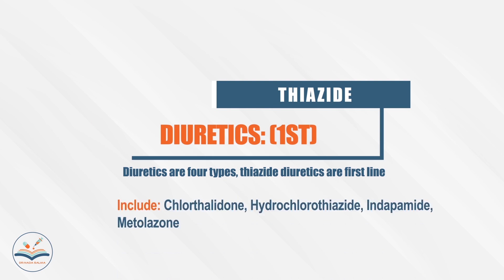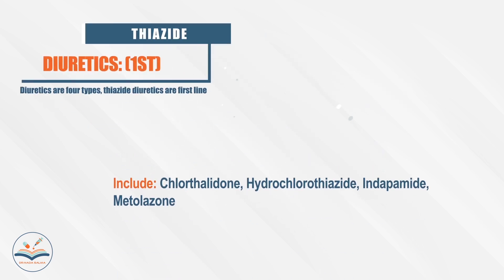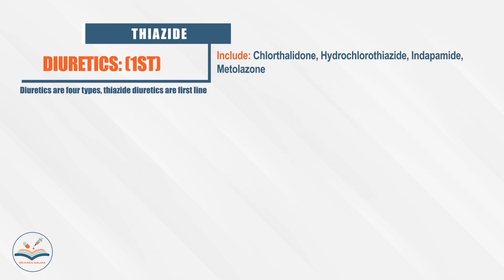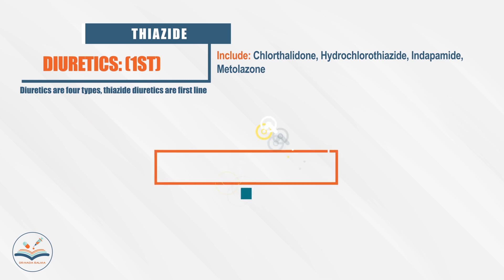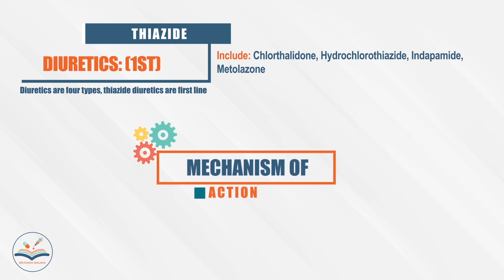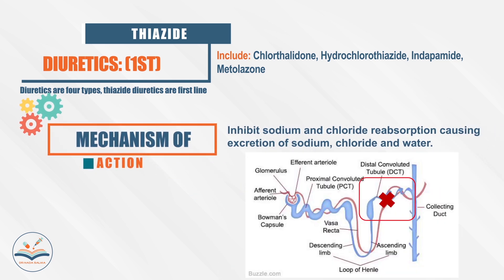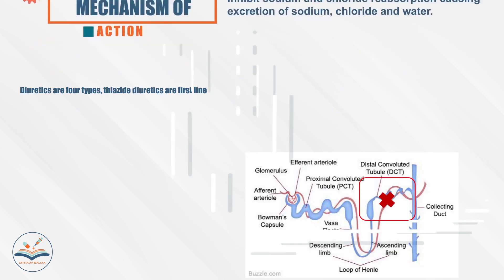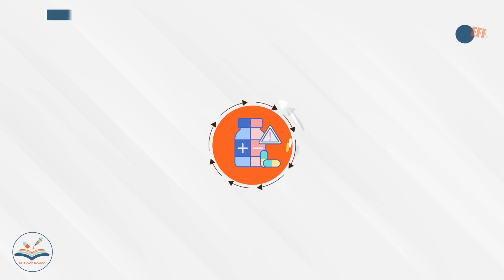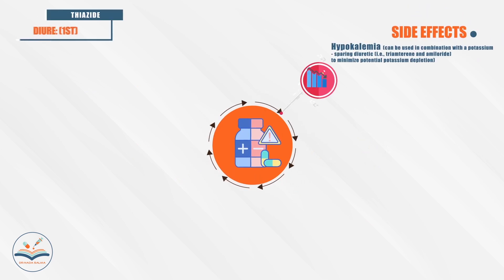Thiazide diuretics are one of the four first-line antihypertensive agents; examples include hydrochlorothiazide and indapamide. They inhibit sodium and chloride reabsorption, causing excretion of sodium, chloride, and water. Side effects include hypokalemia.